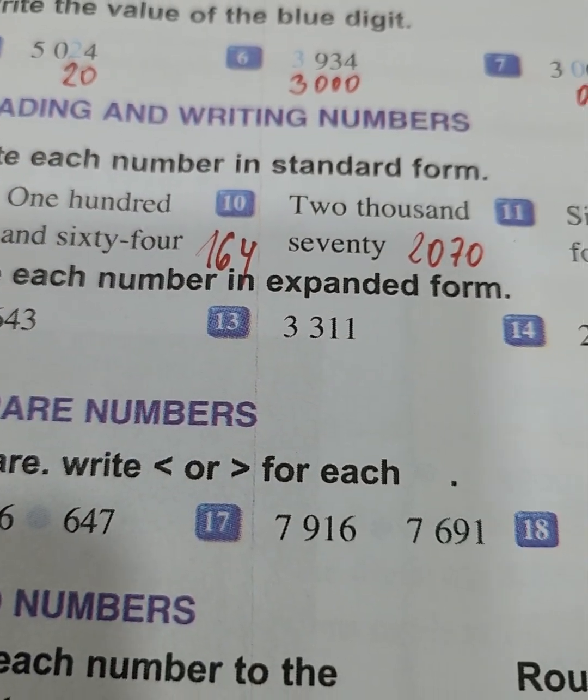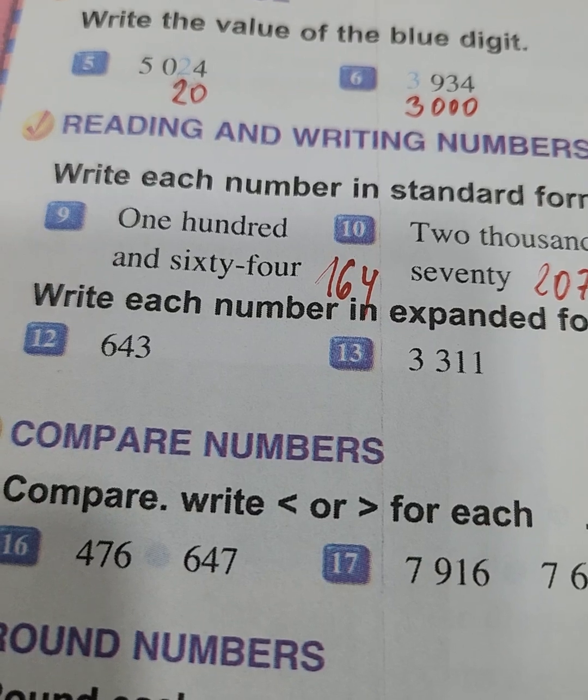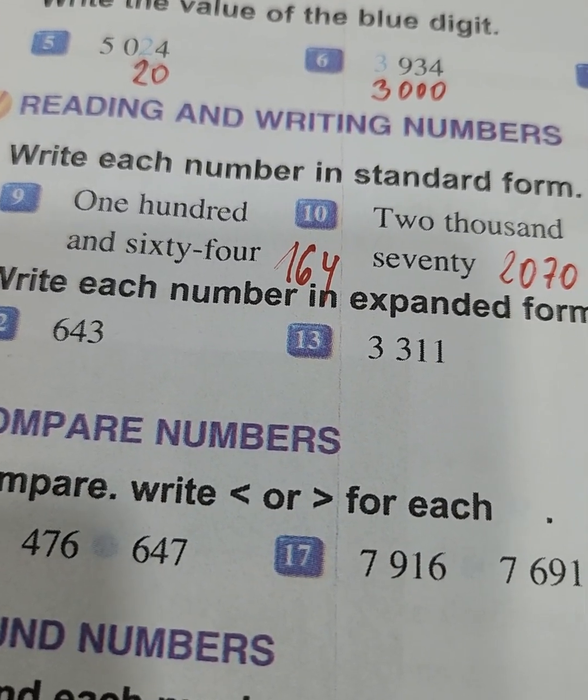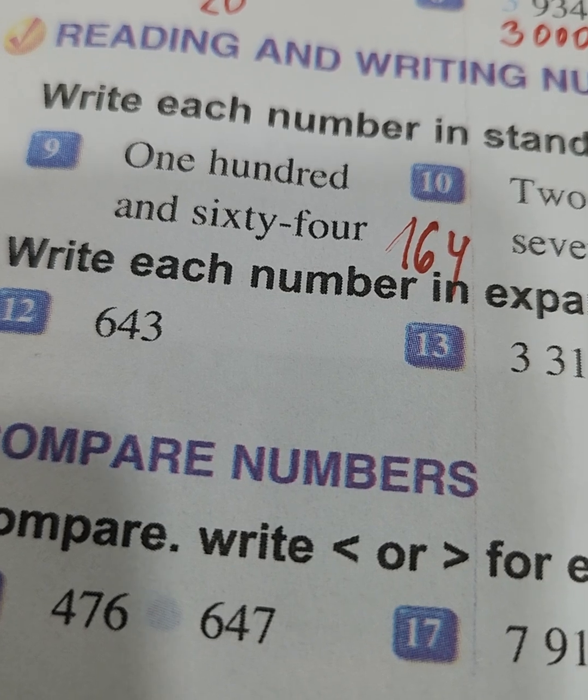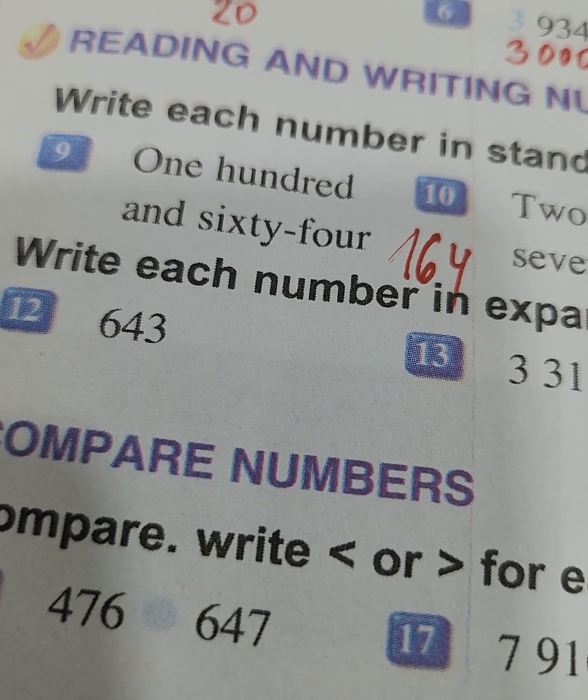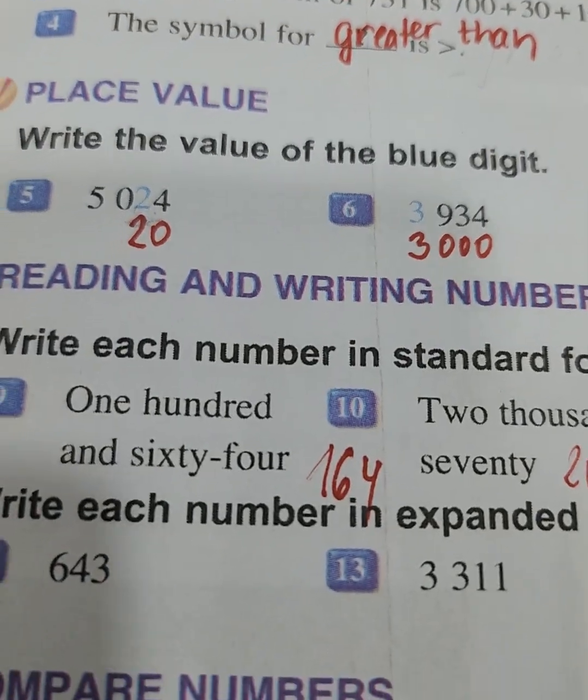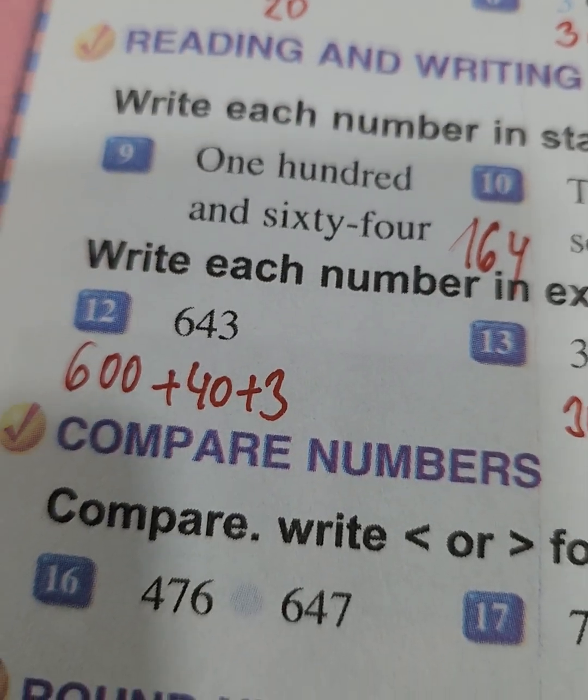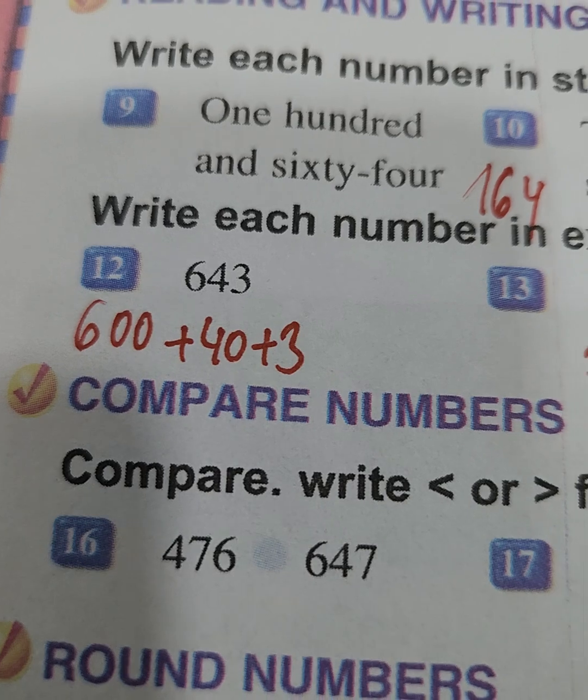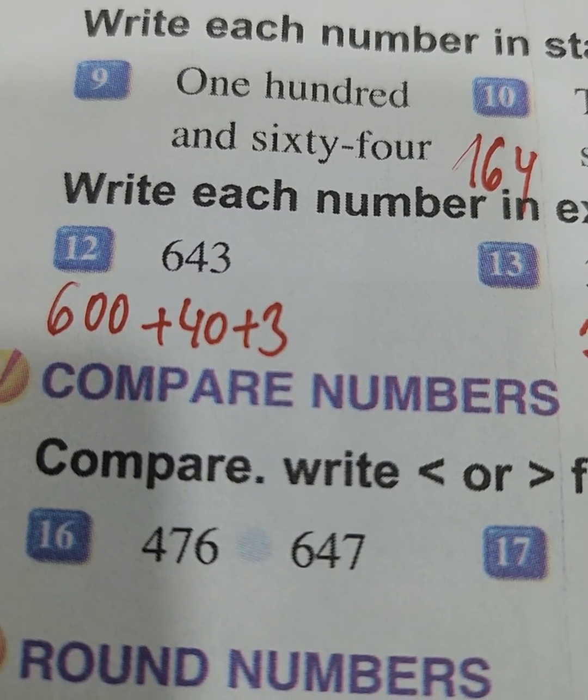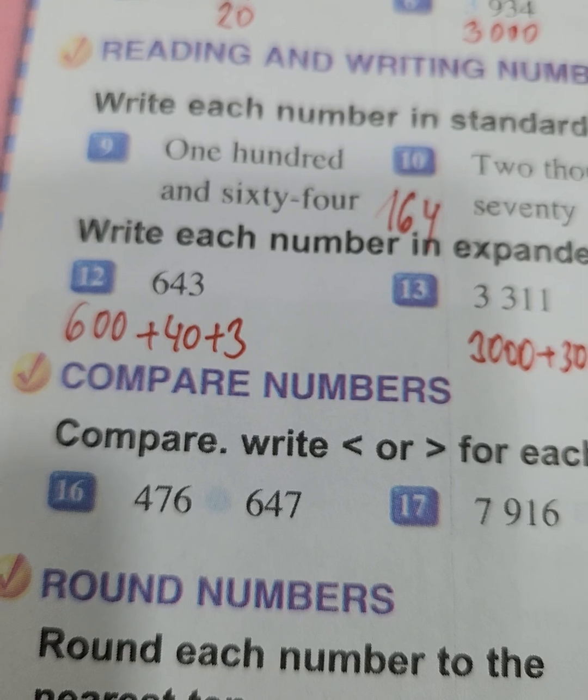Now write each number in expanded form. What does it mean to write in expanded form? It means to write this number as 600 plus 40 plus 3. So let's look together. The number 643, we will write in expanded form like 600 plus 40 plus 3.